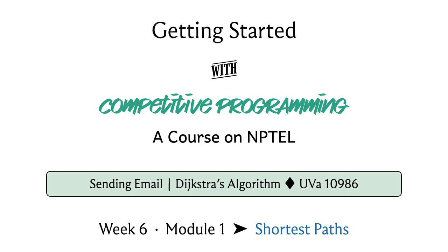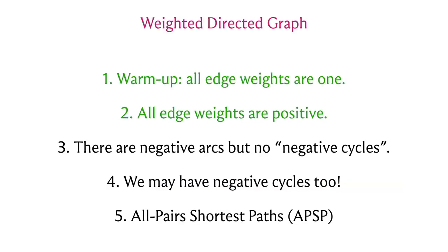Welcome back to the third segment of the first module in week six, where we are talking about the shortest paths problem. In particular, we have been focused on the single source shortest path problem. So far in the first two segments, we discussed the case when all edge weights are uniform — essentially the same as working with an unweighted graph — where the BFS algorithm will do the job.